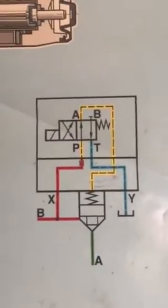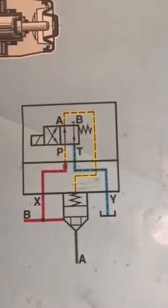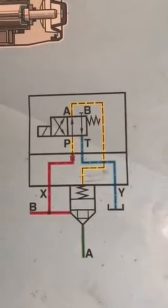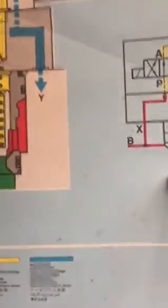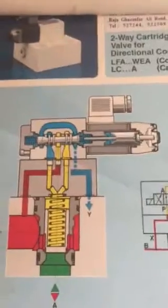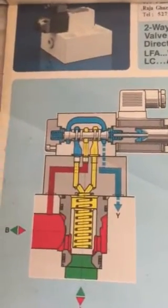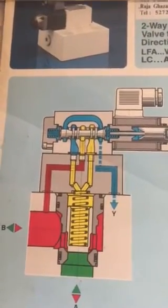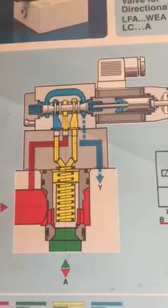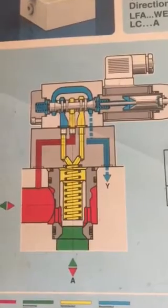The red line is the oil under pressure and the blue line is the drain line and the green line is the A line. As you can see, this is one of the many types of valves in hydraulics. This one is called the two-way cartridge valve for directional control.